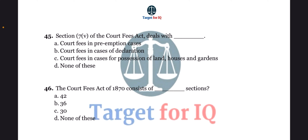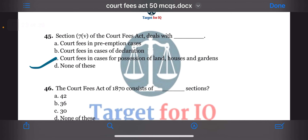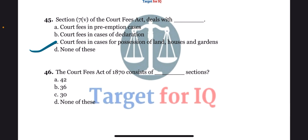Next question: section 7, clause 5 of the Court Fees Act deals with dash. The options are A. Court fees in preemption cases, B. Court fees in cases of declaration, C. Court fees in cases for possession of land, houses and gardens, or D. None of these. The correct answer is option C. Court fees in cases for possession of land, houses and gardens.